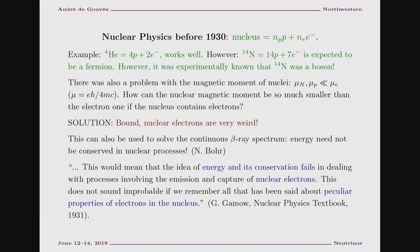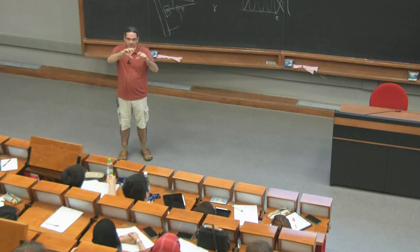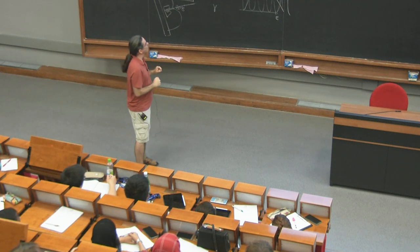Another problem was with magnetic moments. The magnetic moment of the proton is way smaller than that of the electron. When you measure magnetic moments of certain nuclei, those are of order the proton magnetic moment — way smaller than the electron magnetic moment. It was very hard to understand how the nucleus could have all those electrons in it but have a tiny contribution to the magnetic moment from electrons.